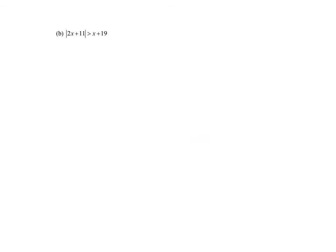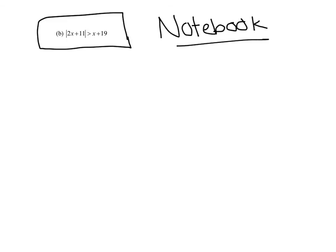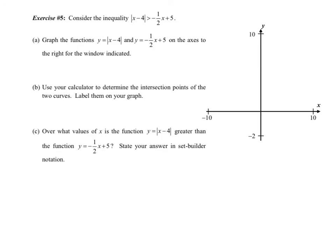We'll be looking for the next problem in your notebook tomorrow — notice the absolute value is by itself, so stem your two equations; we want a number line and an inequality. Pause it and complete this one on your own, then continue for the last problem. For this last problem, we're going to solve graphically by graphing one side as y1 and the other side as y2 on your calculator. Pause it, sketch both on paper, then continue.